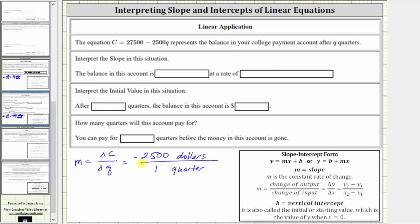So the slope is telling us that the account balance decreases by 2,500 dollars per one quarter or each quarter. We know it's decreasing because this value here is negative. So as a sentence, the balance in this account is decreasing at a rate of 2,500 dollars per quarter. Notice how we don't include the negative sign here because that's indicated by stating the account is decreasing.